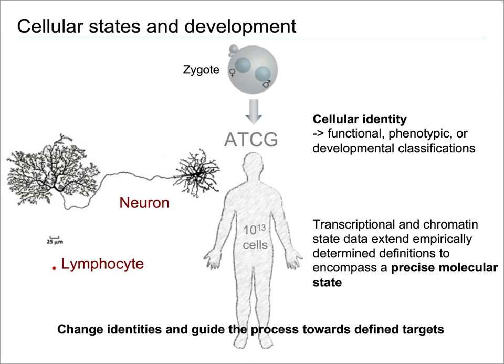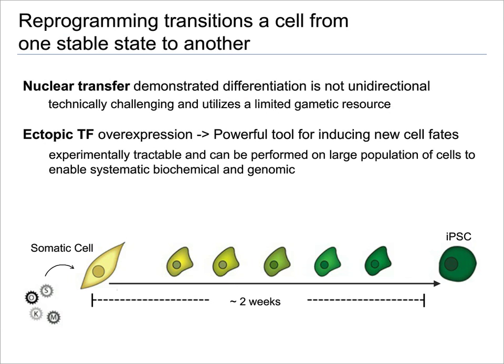Nuclear transfer was first used to demonstrate that differentiation is not a unidirectional process. While being very exciting, it has a number of technical challenges that are hard to overcome. So the emergence of ectopic transcription factor expression as a tool to convert one cell type into an alternative has been very exciting. The major difference here is we are able to do this on large populations of cells and therefore can do systematic biochemical as well as genomic characterization.